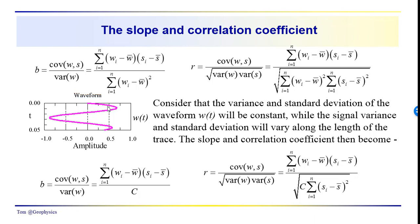The waveform is our reference function — we're considering it our independent variable. We aren't really changing it, and at each point where we calculate a regression line, we aren't changing the number of samples in the waveform. So its variance and standard deviation are going to be constant, while the signal variance and standard deviation at each step will vary as we go from the top to the bottom of the trace.